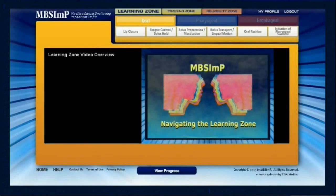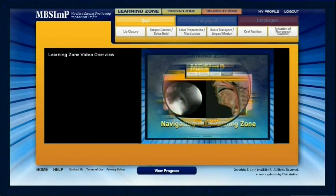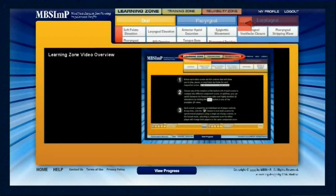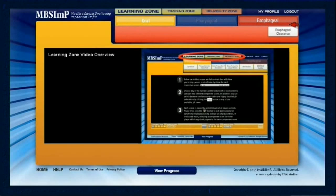The MBS-IMP training begins with the Learning Zone, which introduces and explains the MBS-IMP's 17 physiologic components and scores associated with each that together comprise the assessment tool. Organized according to three physiologic domains, the 17 components are categorized under either the oral, pharyngeal, or the esophageal domain.